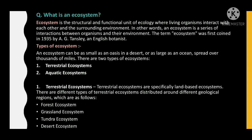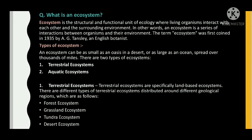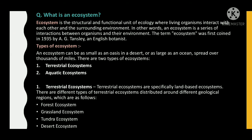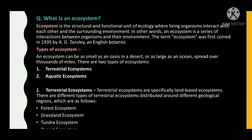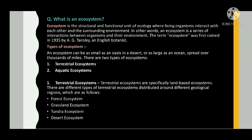An ecosystem can be as small as an oasis in a desert or as large as an ocean, spread over thousands of miles. There are two types of ecosystem: terrestrial ecosystem and aquatic ecosystem.